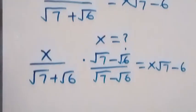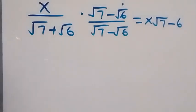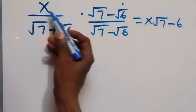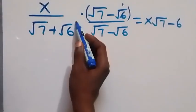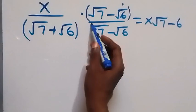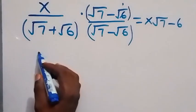So here we have done what is called rationalizing the denominator. Here we multiply directly x, we multiply this, we open this bracket and we multiply each other.